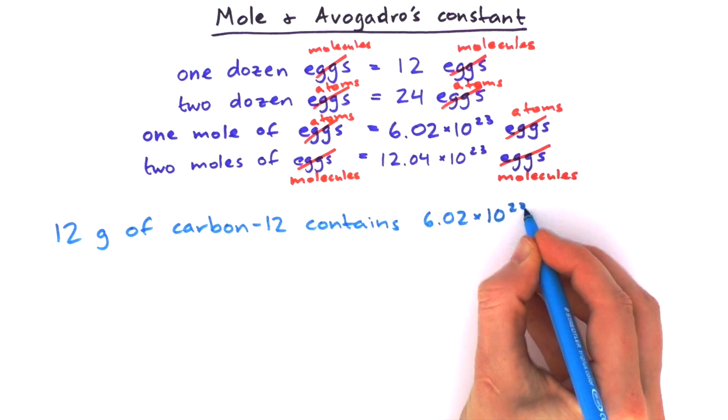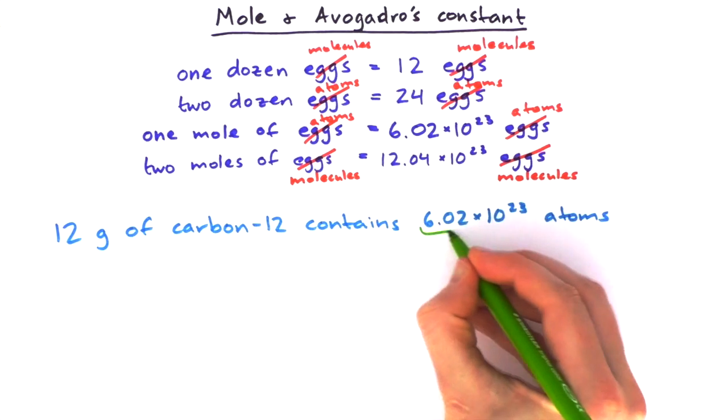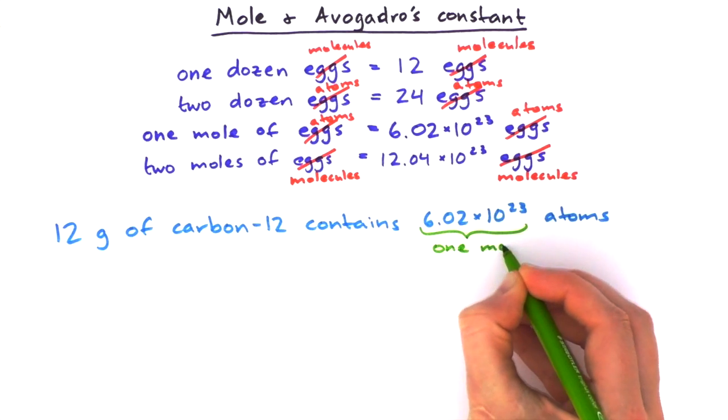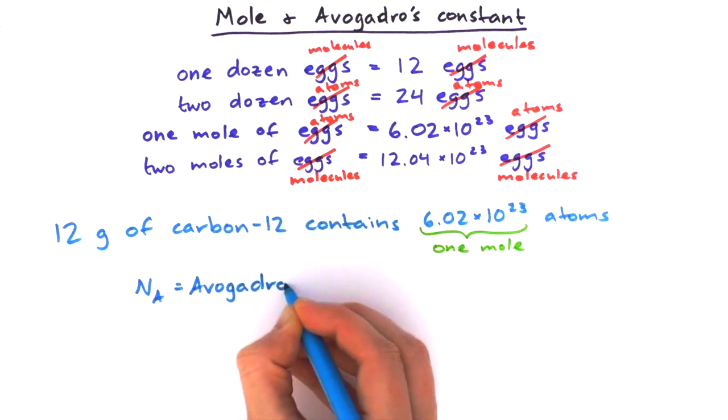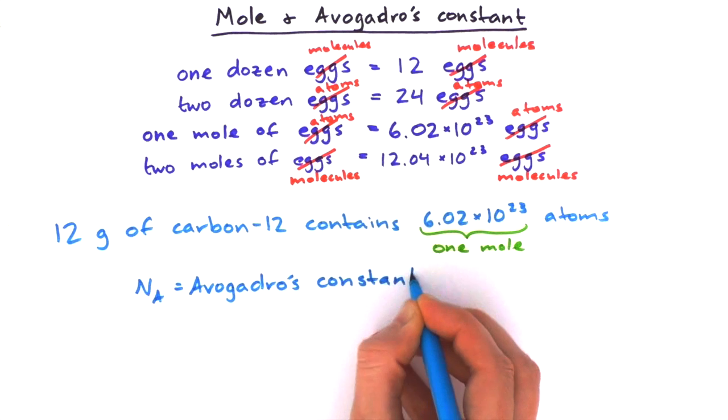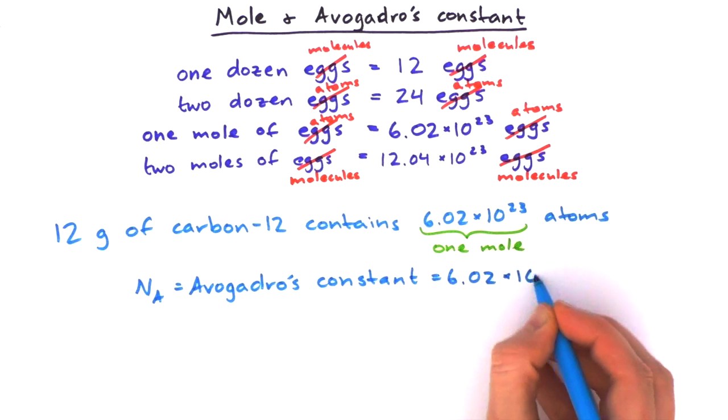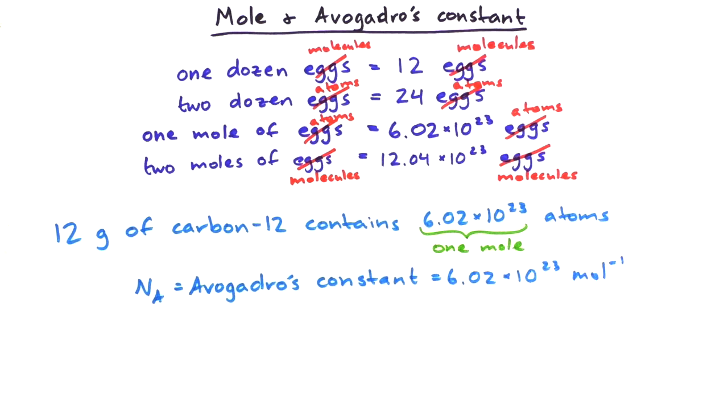We call this constant Na, which stands for Avogadro's constant, and the value is 6.02 times 10 to the power of 23 per mole.